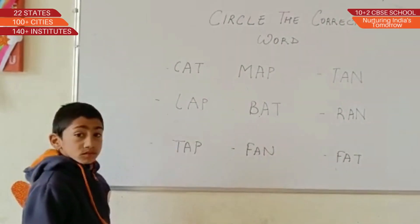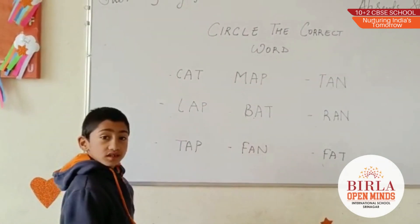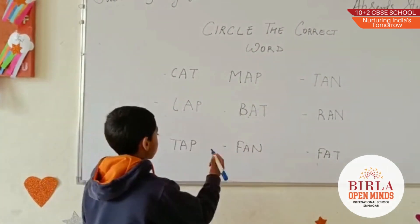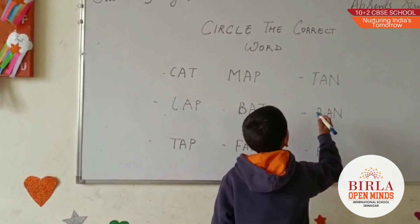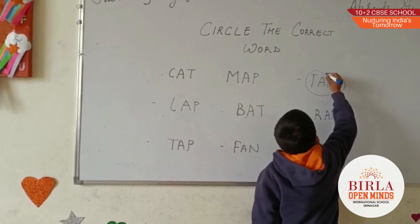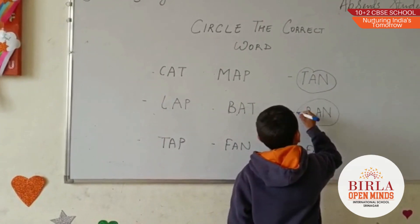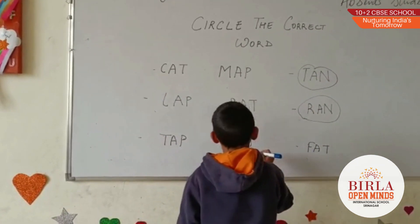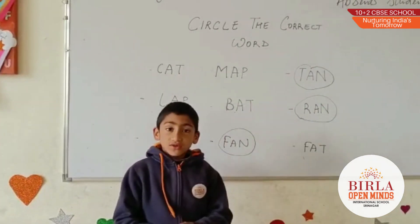Good morning, Fazal. Good morning. What activity are we doing today? Circle the correct words. Okay. Can you circle AN family words? Yes. Very good. Next. All the correct words. Very good. Next. Very good. Thank you, Fazal.